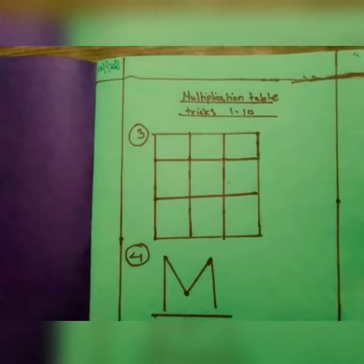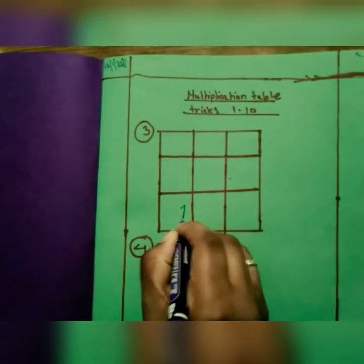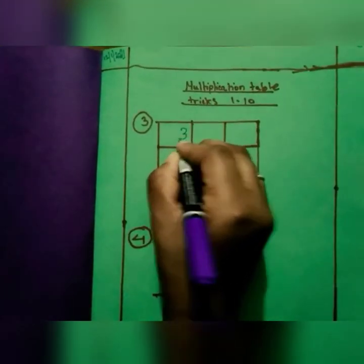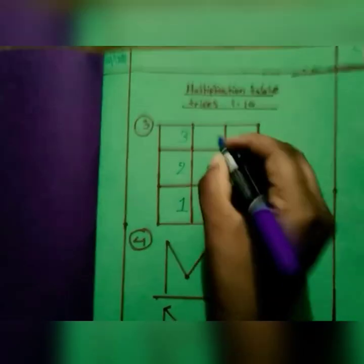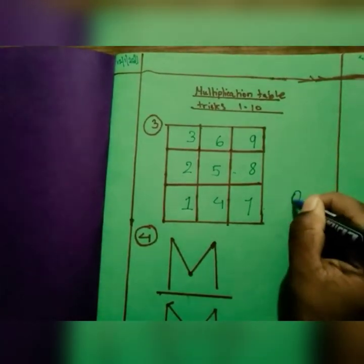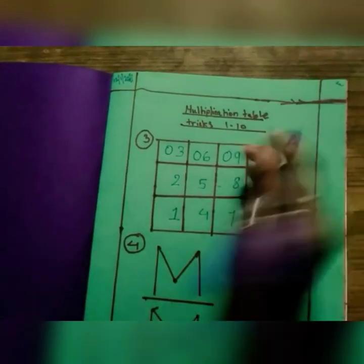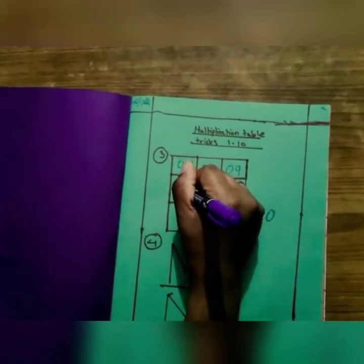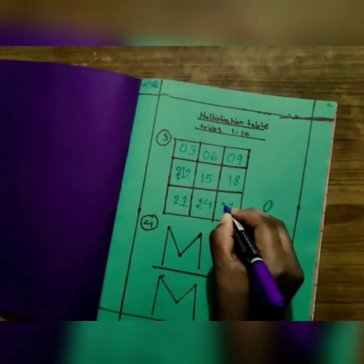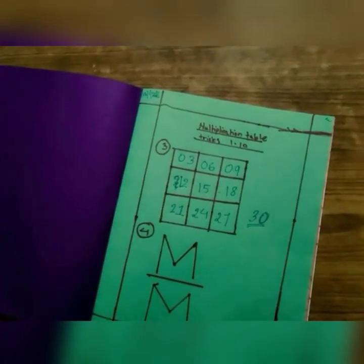First we are going to start with the table of 3. We have to draw a tic-tac-toe box and write 1, 2, 3, 4, 5, 6, 7, 8, 9, and 0. In the first row put zeros: 0, 0, 0. In the second row put 1, 1, 1. In the last row put 2, 2, 2. Near the zero we put 3, and here we get the table of 3.